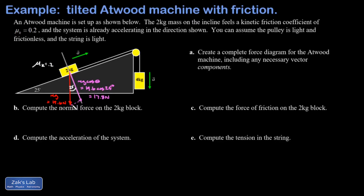There's also a parallel component equal to mg sine theta. Transporting that vector and attaching it to the mass, we get 19.6 sine 25°, which gives a decimal approximation of 8.28 newtons, keeping three significant figures as a convention. That takes care of the force of gravity and its components.